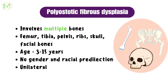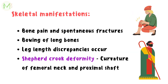No gender and racial predilection is reported, and it is known to affect unilaterally more than bilaterally. The skeletal manifestations of the polyostotic type are bone pain and spontaneous fracture, bowing or bending of long bones with length discrepancies of the leg. One of the most notable skeletal manifestations is Shepherd's Crook deformity, where curvature of the femoral neck and proximal shaft is seen.